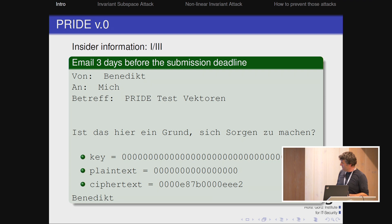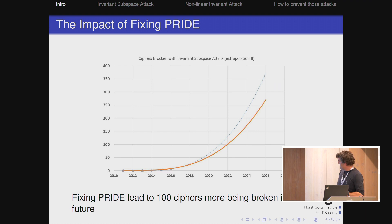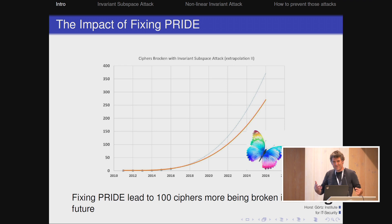It's good for PRIDE that this email came three days before the deadline. But what would happen if you had not found this? PRIDE would be broken. And now the interesting thing is, what happens if you do the same prediction as before. Because we fixed PRIDE, a hundred other ciphers will be broken. That's interesting — sometimes you make changes and you're not aware of the effects. That's the butterfly thing. That's the first piece of insider information.